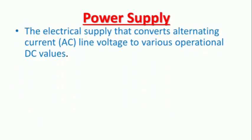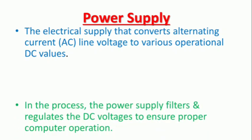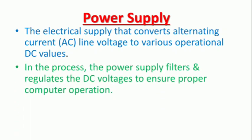This is the power supply. It is the electrical supply that converts alternating current line voltage to various operational DC values. The power supply filters and regulates the AC voltage to ensure proper operation.